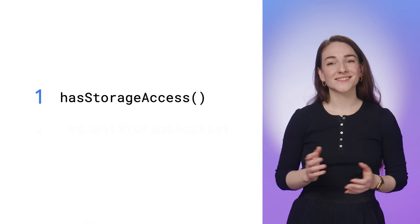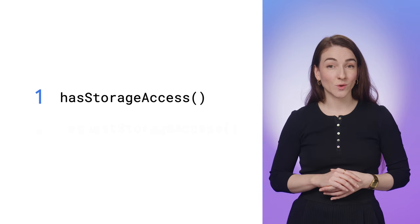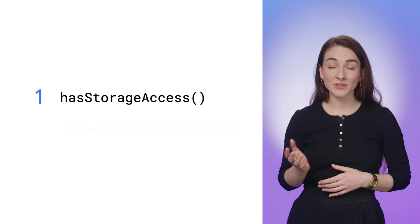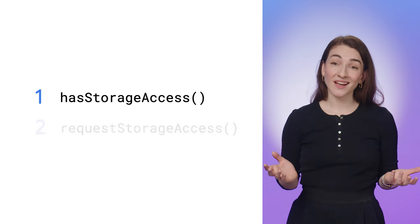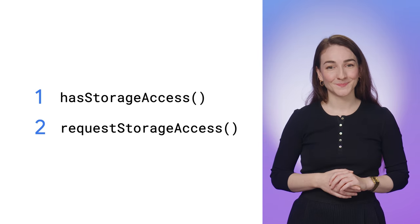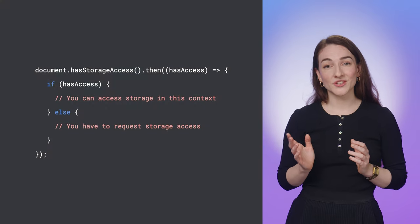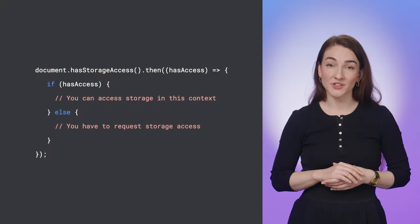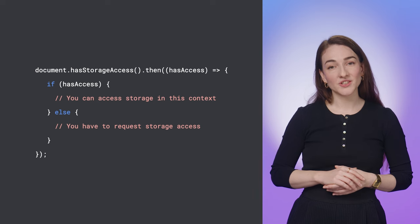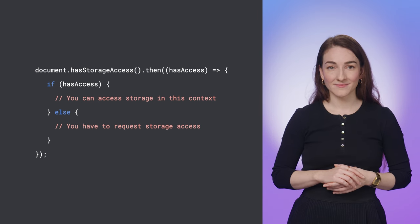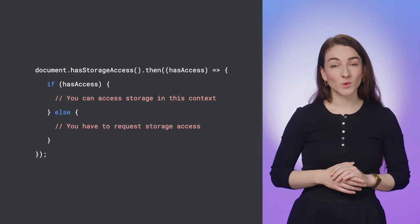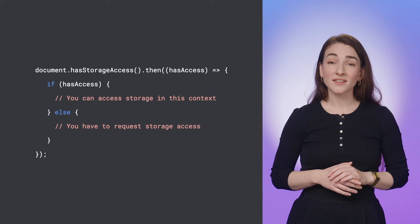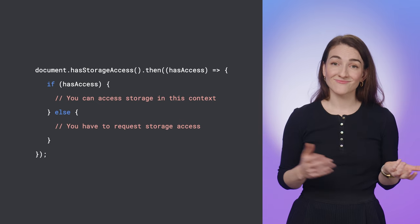So how does the Storage Access API work? Storage Access API has methods for sites to check whether they currently have access to unpartitioned cookies and, if not, to request it. HasStorageAccess is used to check if the embedded site has access to unpartitioned cookies and other storage in the current context. It returns a promise with a boolean result, indicating if the document has storage access or not.